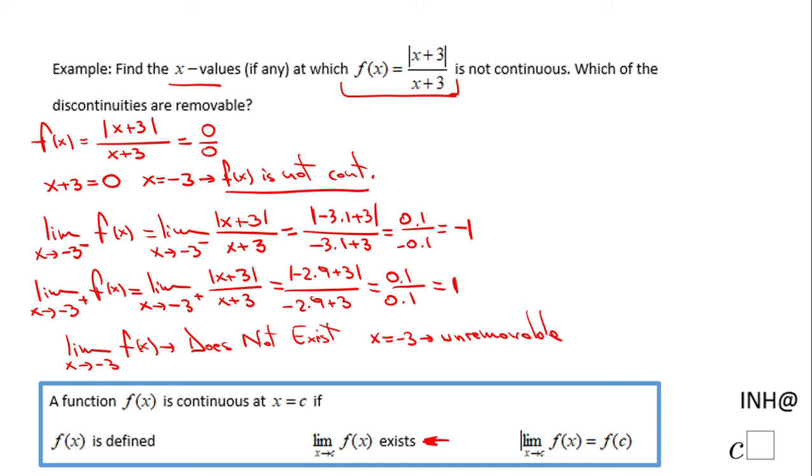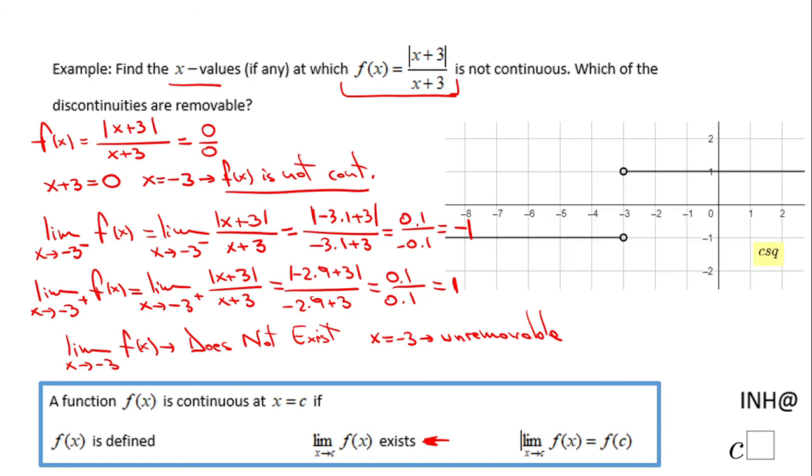If the limits are the same, the discontinuity can be removed. But if the limits are different, you have what we call a jump. If you notice here, we have a jump. And that cannot be removed. In the picture, when I get closer to negative 3 from the right side, the limit is 1. When I go closer from the left side, the limit is negative 1.